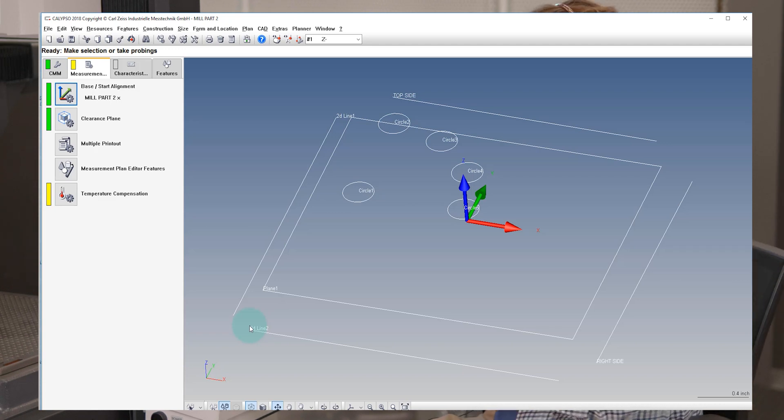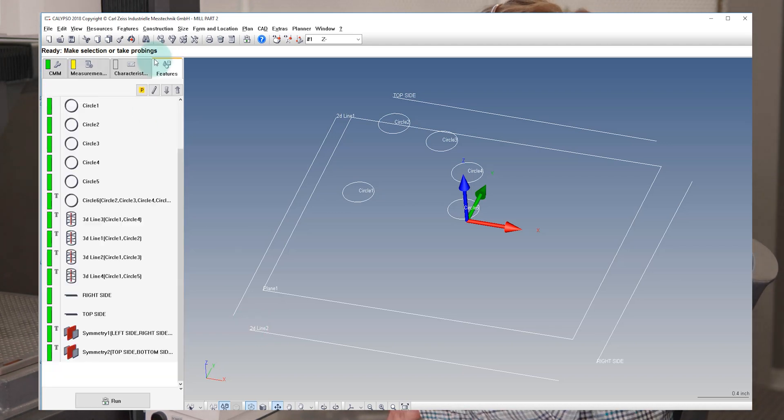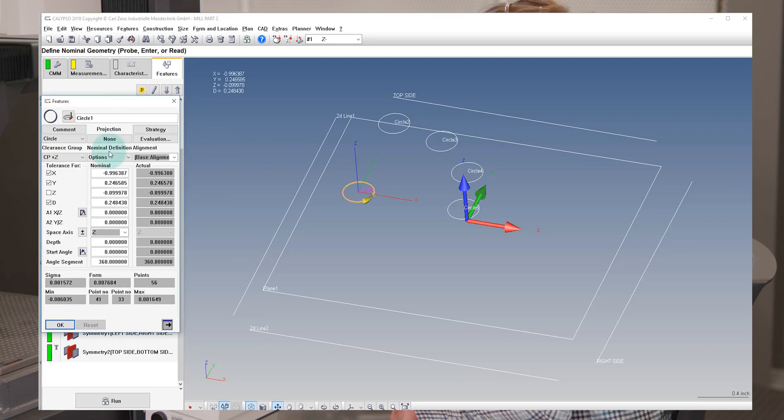Now let's check and see. We'll check circle one and see if the nominals return what's on the drawing. So we've got about an inch and then about a negative one inch and then about a quarter of an inch. We'd need to go in here and change these to what's on the drawing.